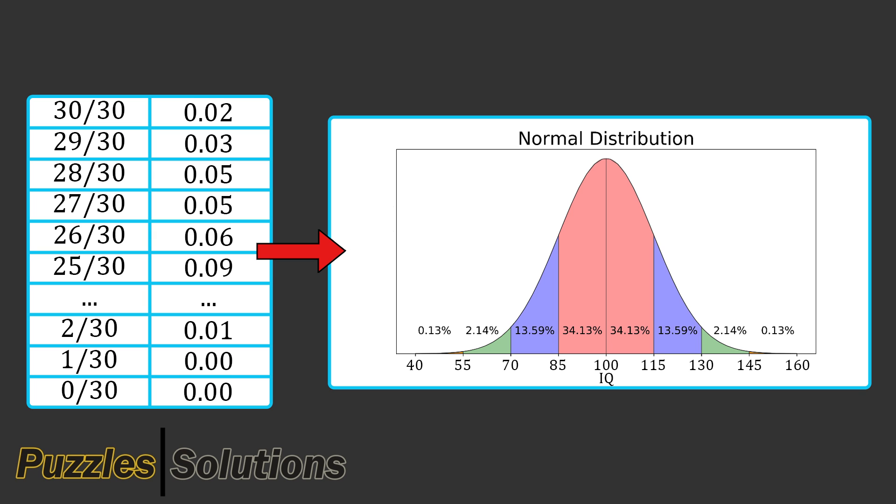It is the area under the curve that describes probability. For example, in the interval from 100 to 115 IQ, the area under the curve is 0.3413, equivalent to 34.13%. This percentage has two meanings. The first meaning is that 34.13% of the population taking the test should be between 100 and 115 IQ. The second meaning is that a randomly selected person taking the test has a 34.13% probability of scoring between 100 and 115 IQ.